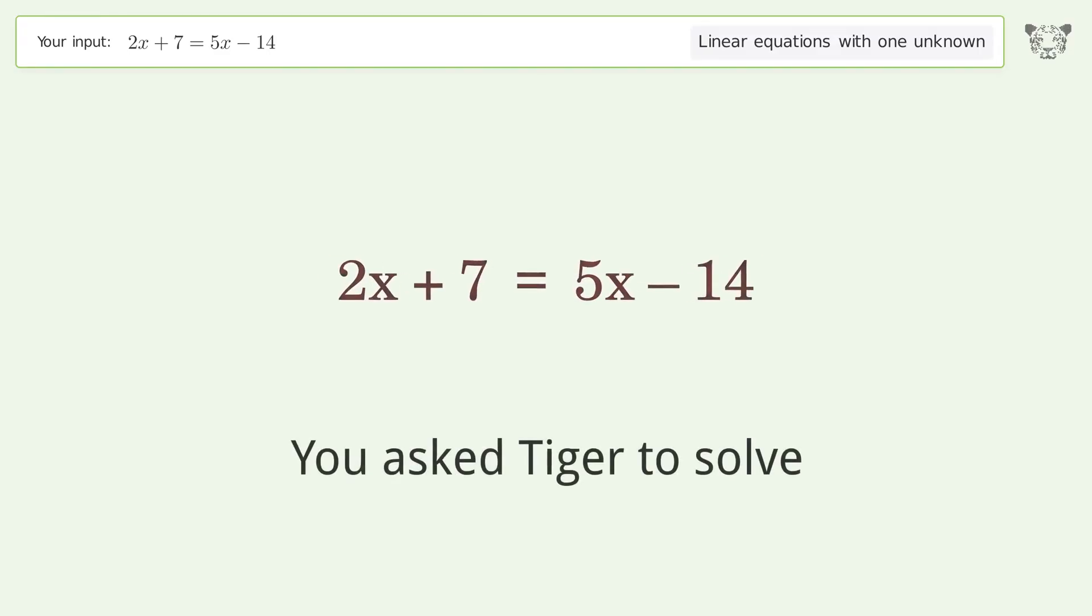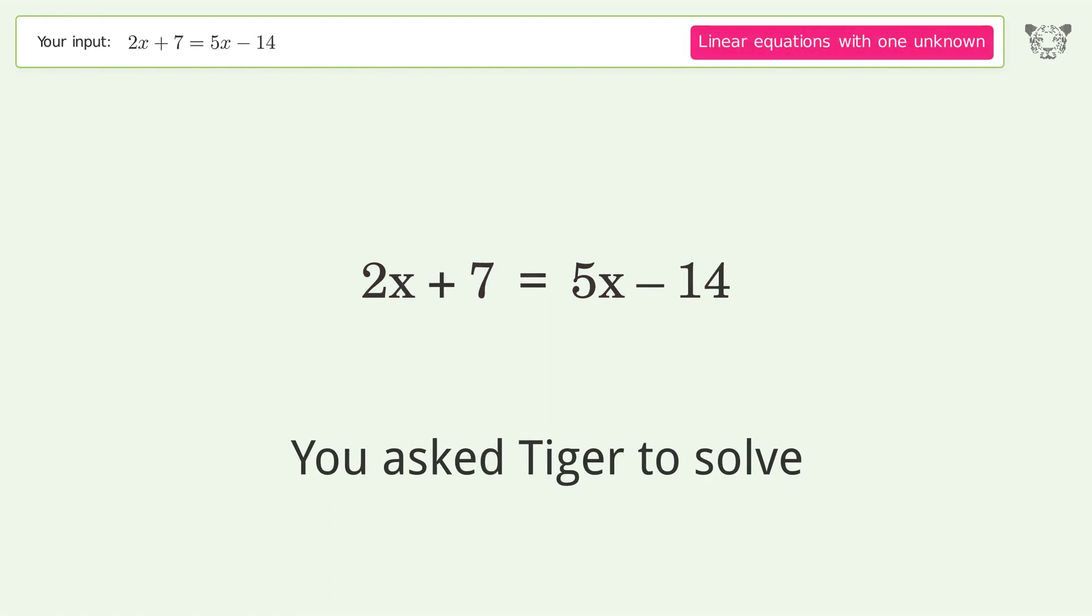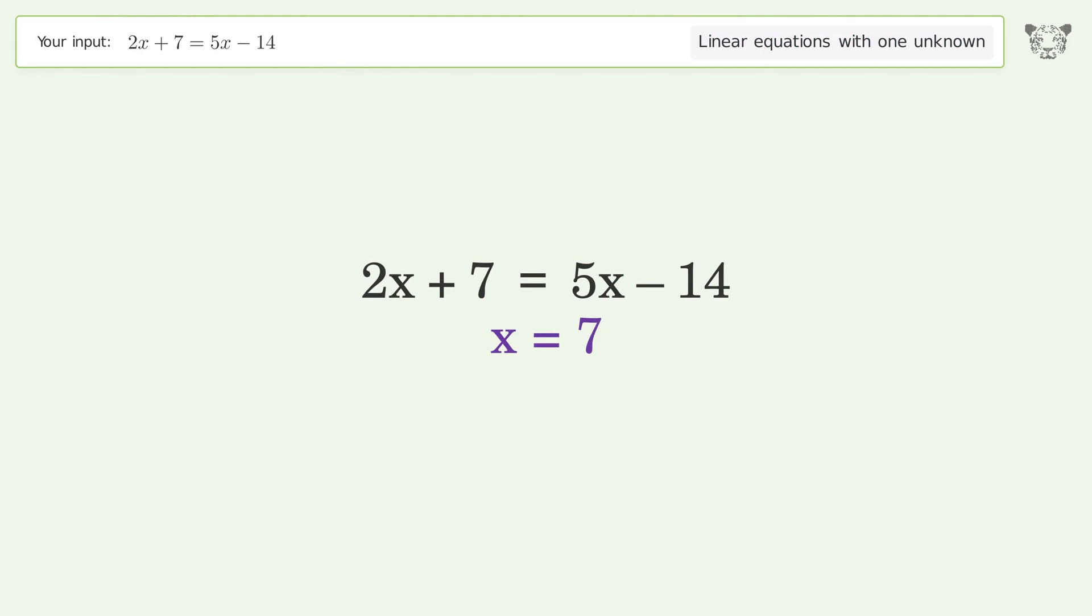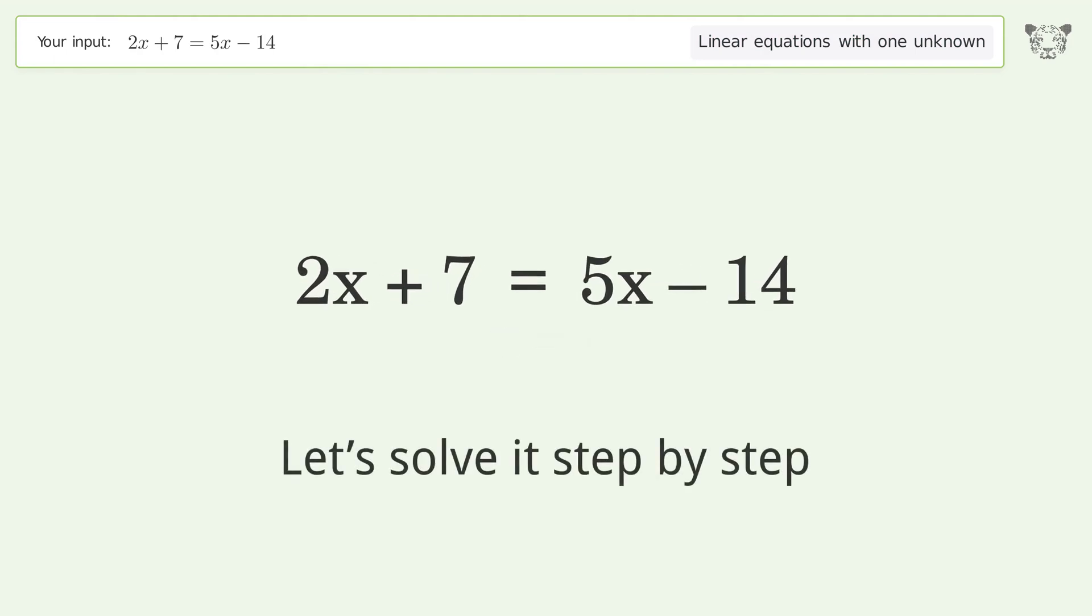You asked Tiger to solve. This deals with linear equations with one unknown. The final result is x equals 7. Let's solve it step by step.